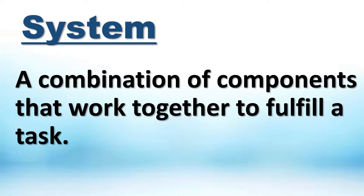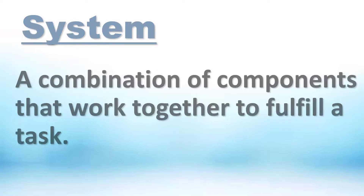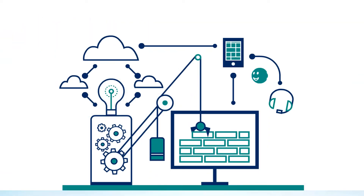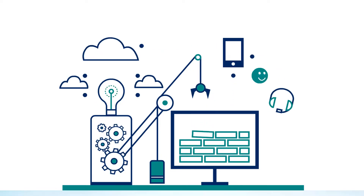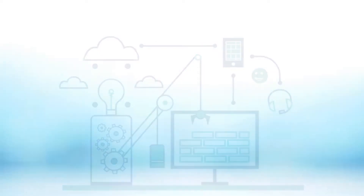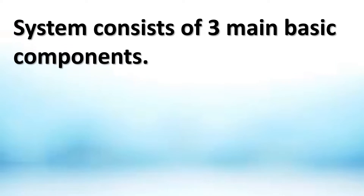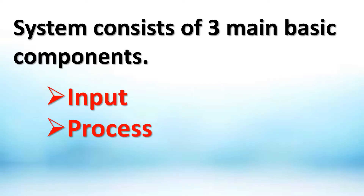A system is a combination of components that work together to fulfill a task. A system consists of three main basic components: input, process, and output.